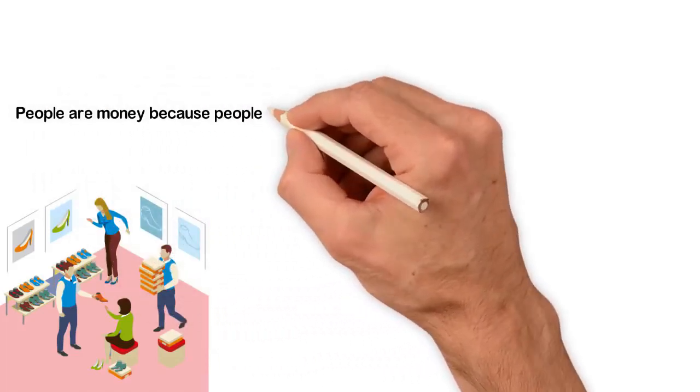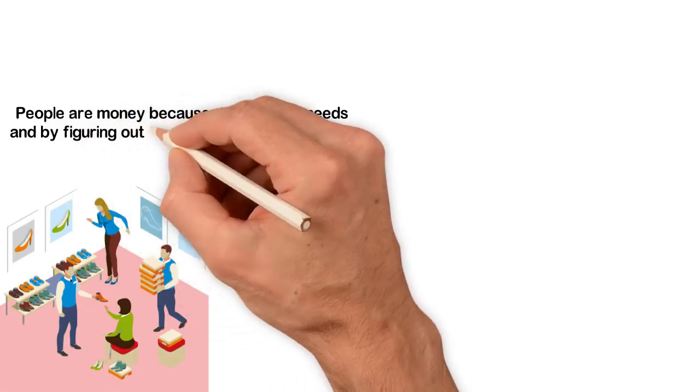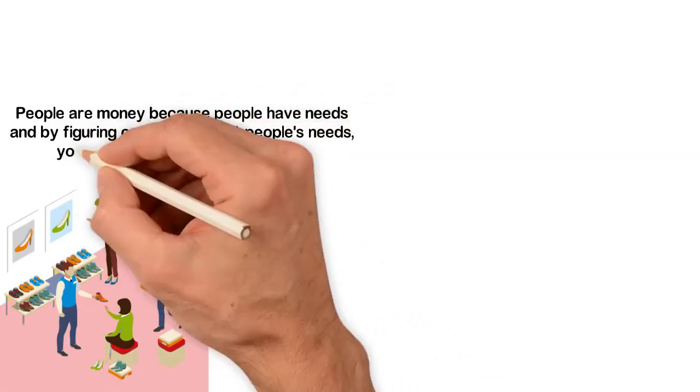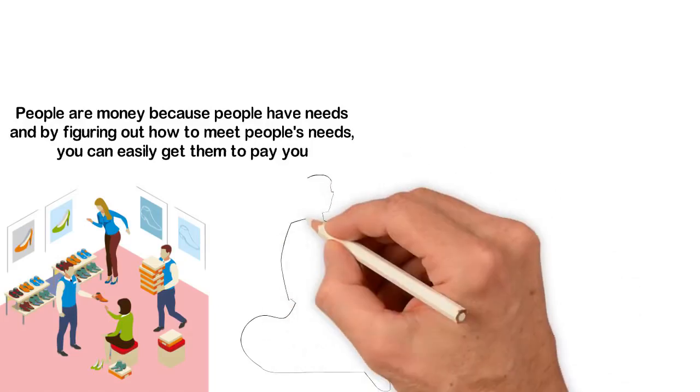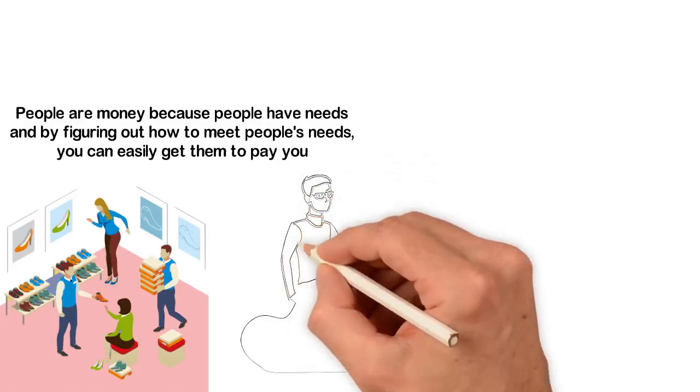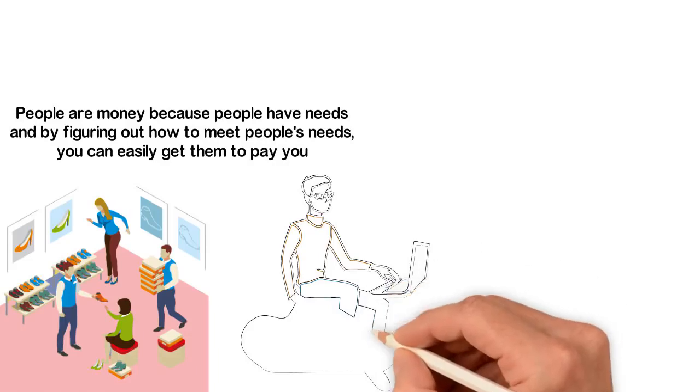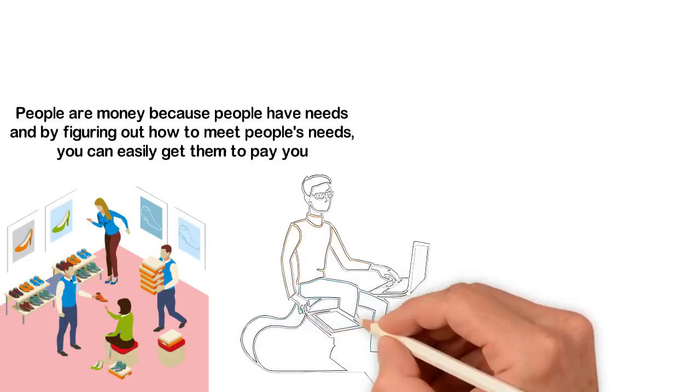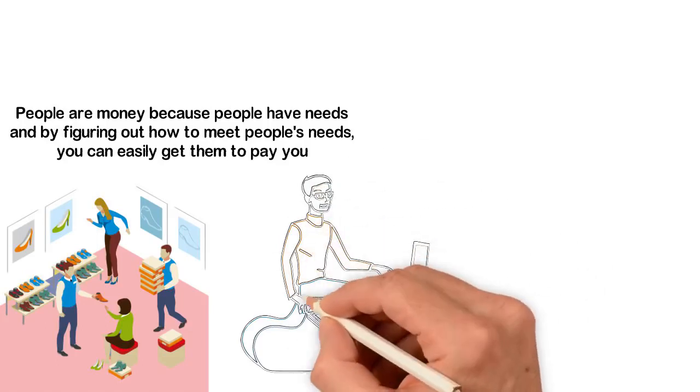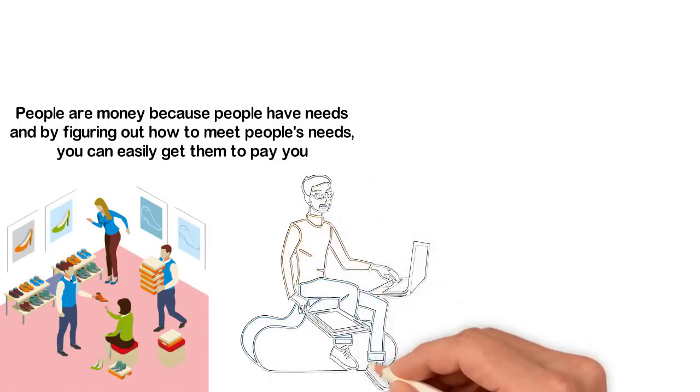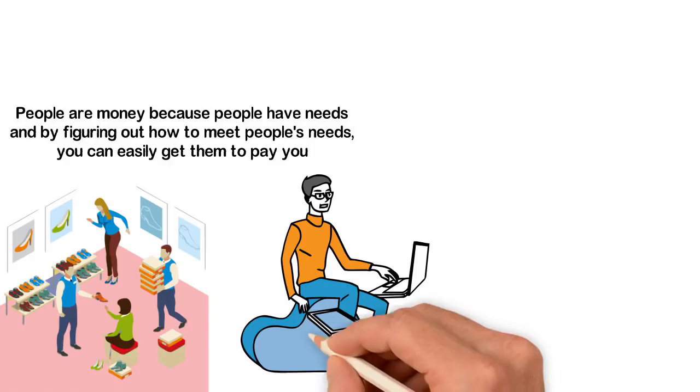People are money because people have needs and wants, and by figuring out what people want, you can easily get them to pay you. Now, what if you can see all these people in a single room? If there could be a magic that can bring a billion people together in the same room, since we've established that people are money, you being in that room should make you a millionaire, right?